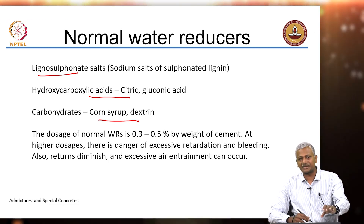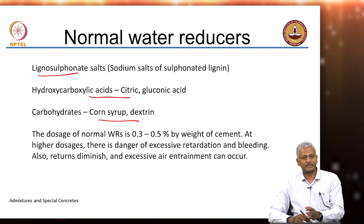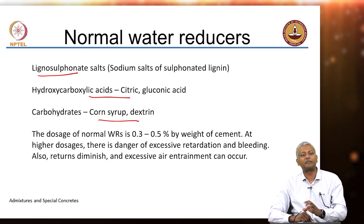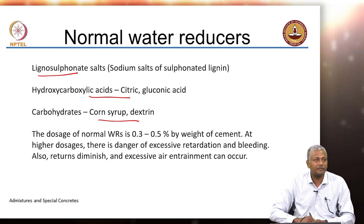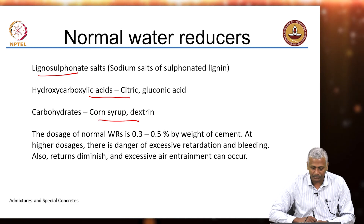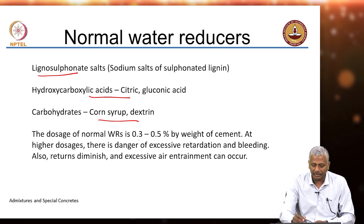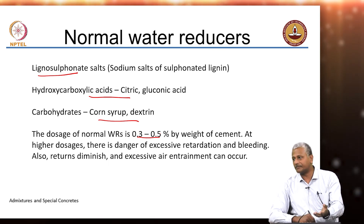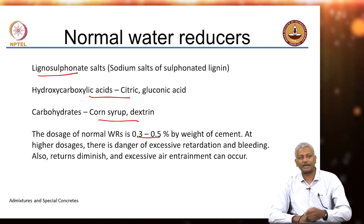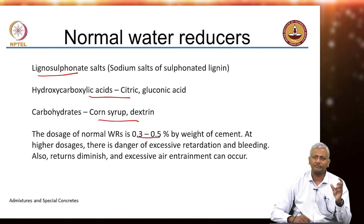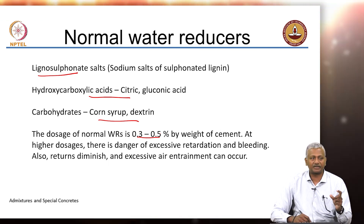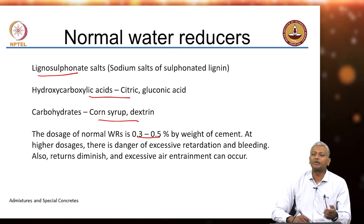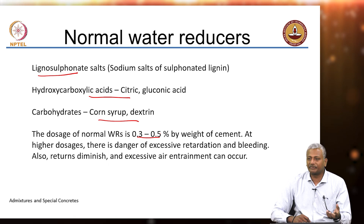It also turns out that many of these chemicals are also effective retarders — they retard the setting of concrete significantly, and the reason for that will become apparent when we look at the mechanism of action of these water reducers. Typically we use about 0.3 to 0.5 percent of these chemicals by weight of cement. So if you have 100 kilograms of cement, you use 300 to 500 grams of the chemical. We are using very little quantities, but normal water reducers are only capable of giving up to about 8 percent water reduction.